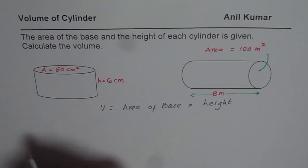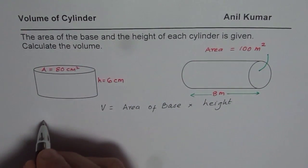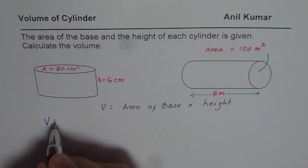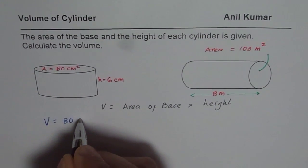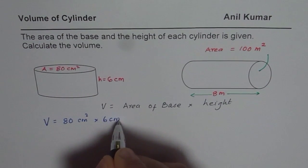So for the first one, we know area is 80 centimeter square, height is 6 centimeter, therefore the volume for this cylinder is 80 centimeter square times 6 centimeter.